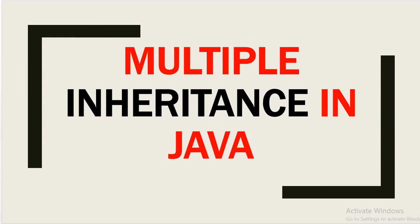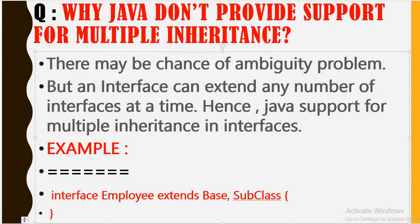Hello friends, welcome to this channel 'Gain Java Knowledge.' Today we are going to discuss multiple inheritance in Java. A Java class cannot extend more than one class at a time, hence multiple inheritance is not allowed in Java with respect to classes. The question is: why does Java not provide support for multiple inheritance?